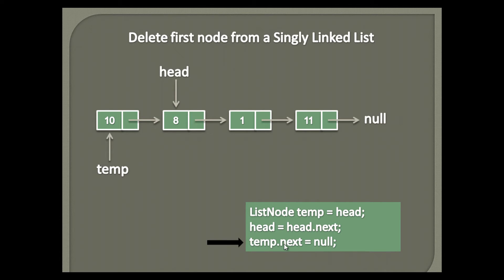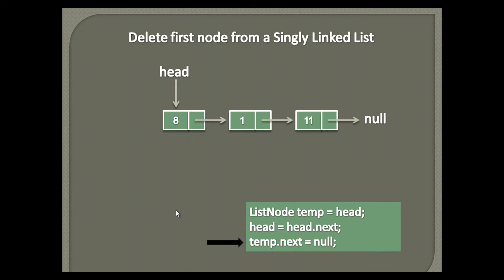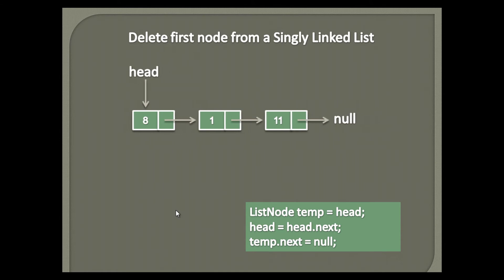In step 3, we disconnect the first node from the linked list using the temp node. We simply assign null to temp node's next and return it back. Initially the list had 4 nodes, and after deletion it has 3 nodes.